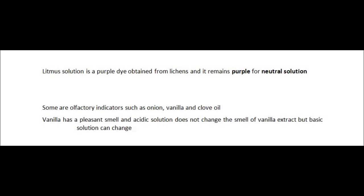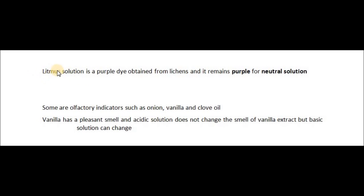Apart from phenolphthalein and methyl orange, there is another type called litmus solution, which is a purple dye obtained from lichens. It remains purple for neutral solutions and changes color in acidic and basic mediums. So litmus solution can also be used as an indicator.